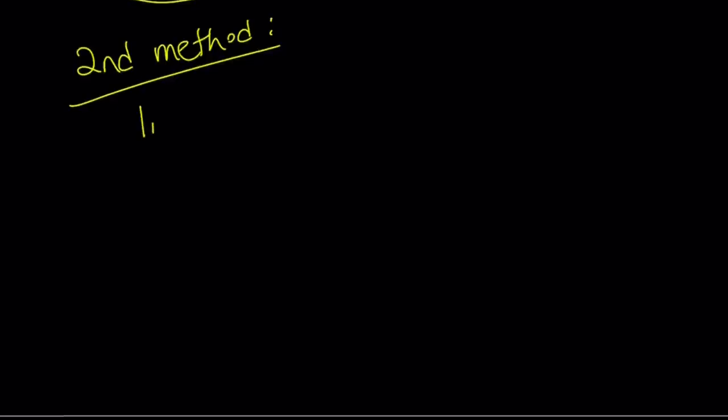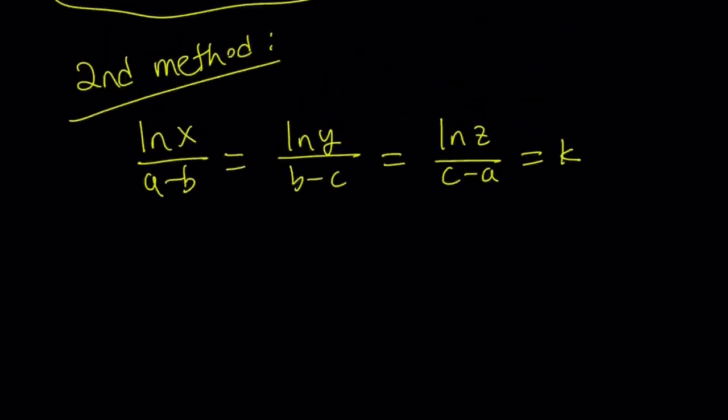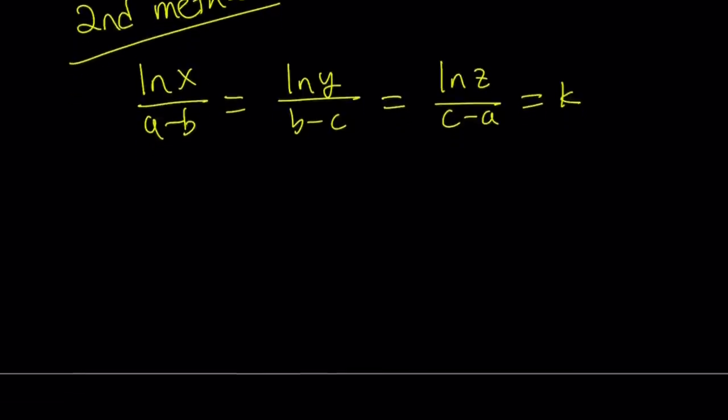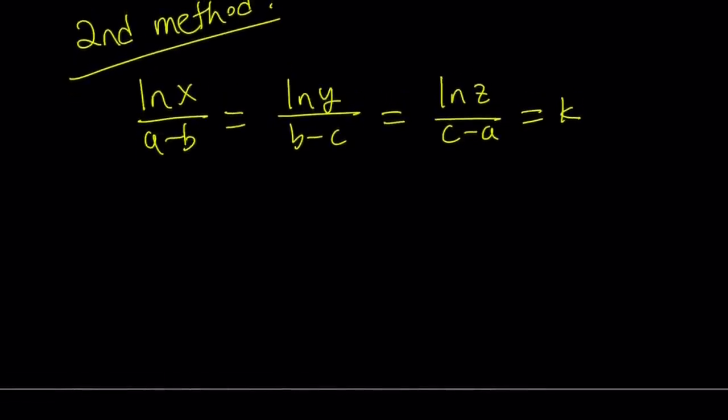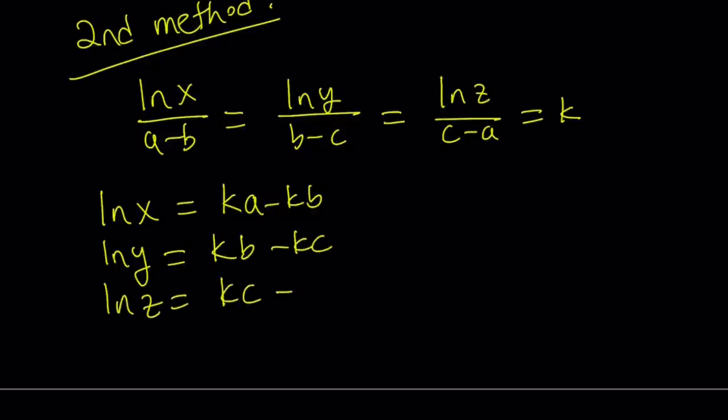My second method involves a different approach. So for the first method we kind of use exponentials. For my second method I'm going to use the log function, more like properties of logs. And somebody suggested that I make a video on properties of logarithms. I think that would be a good idea so I'll think about it and try to put together something. So from here if you do the cross multiplication and by the way I just snuck in the k there. In a lot of problems like this one where we have a proportion, we want to set all these ratios equal to something, so that we can write everything in a similar way. So from here we get ln x equals k times a minus b, which I can write as ka minus kb. ln y becomes kb minus kc. And ln z becomes kc minus ka.